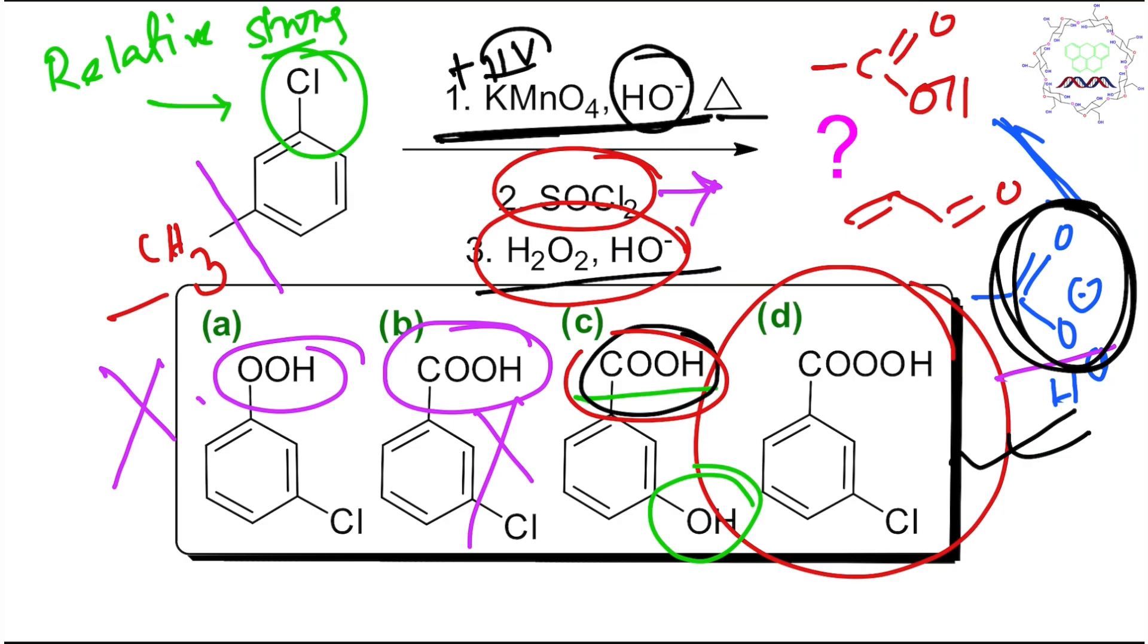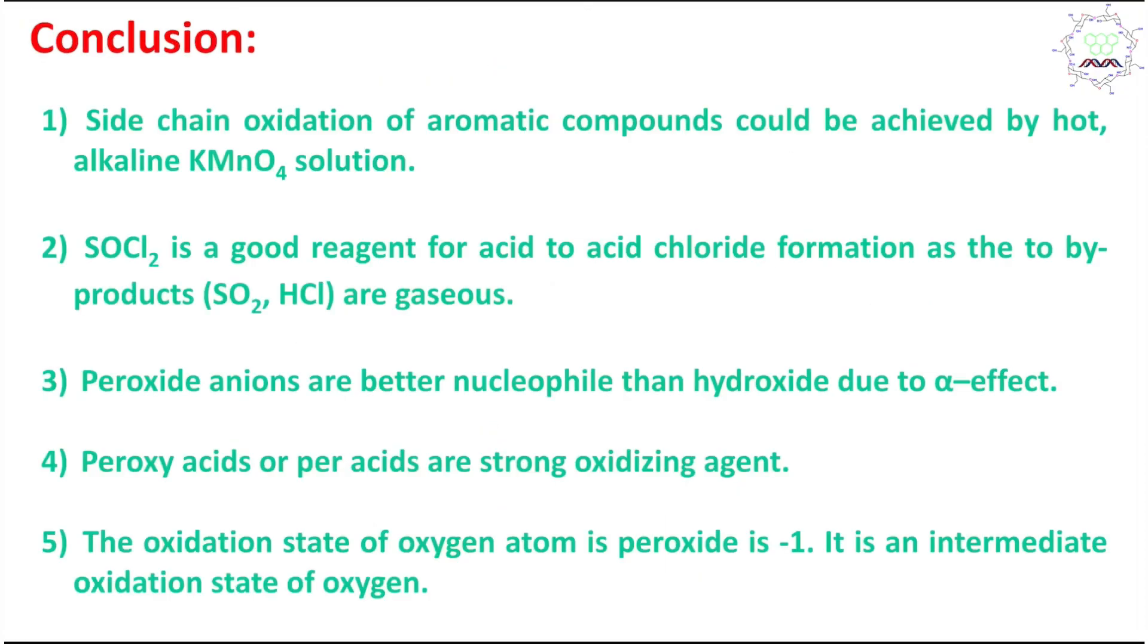Now let's come to some conclusions. What you have learned today is that side chain oxidation of aromatic compounds could be achieved by hot alkaline KMnO4.